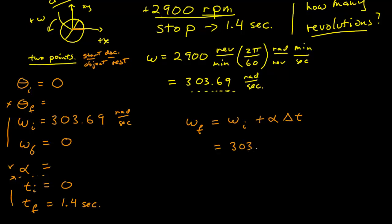This is 303.69 plus alpha times my time interval. My time interval is Δt, which is just 1.4 minus 0, so 1.4.